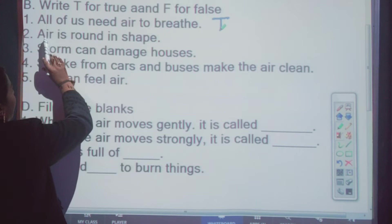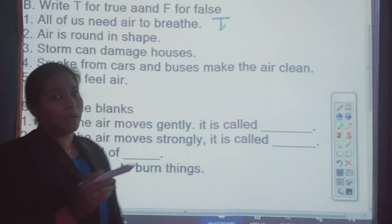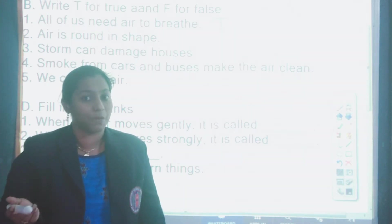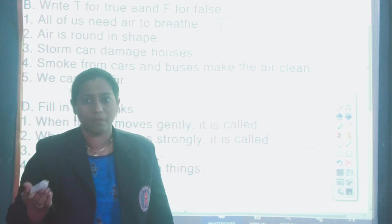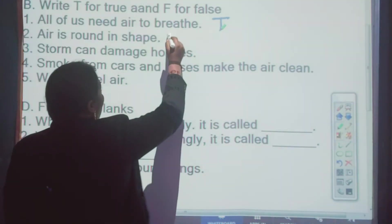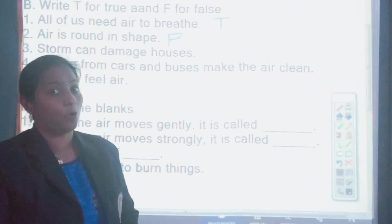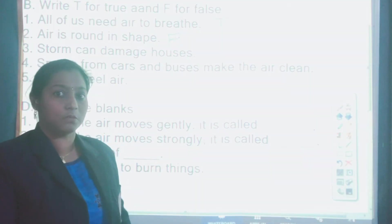Next, air is rounded shape. Aapne kabhi air ko dekha hai? Have we seen air? No. We cannot see air. How do we know air is rounded shape? No. That is false. We are going to put F for false. True means right. F for false means wrong.